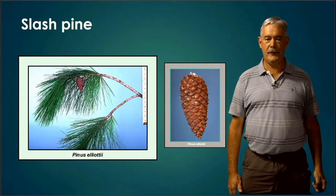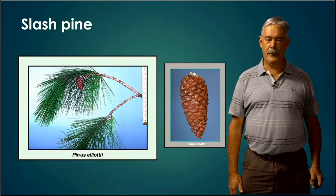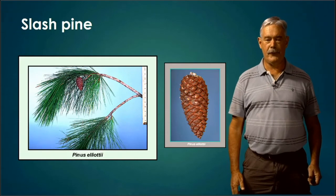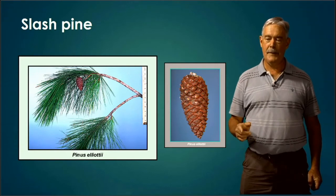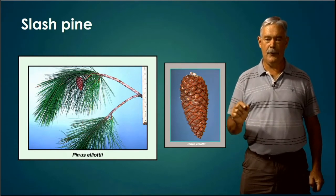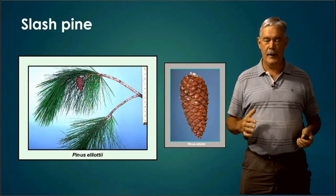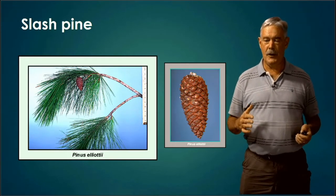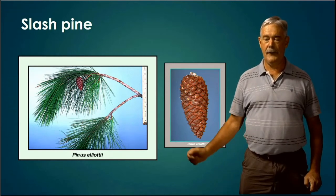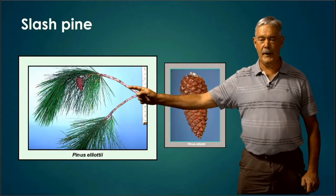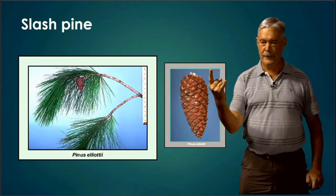Slash pine — we've added a pine to our mix. As we spoke about in the junior video, if the pine name starts with an L, it has three needles in each fascicle or bundle. If it starts with an S, it has two. Slash pine has both an S and an L in its name, so you'll find bundles of both twos and threes. The needle length is in between loblolly and longleaf, about six to ten inches long.